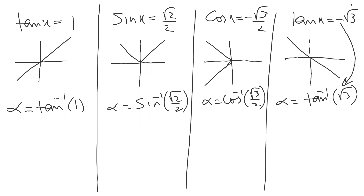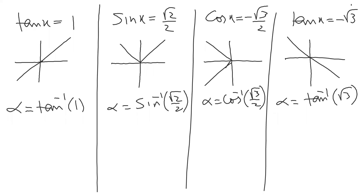Again, alpha is equal to tan inverse of root three. Again, you will not take this minus sign here — that is why I am noting it. You can see I put alpha, alpha, alpha, and alpha. So alpha is just a rough idea — this is called the basic angle.